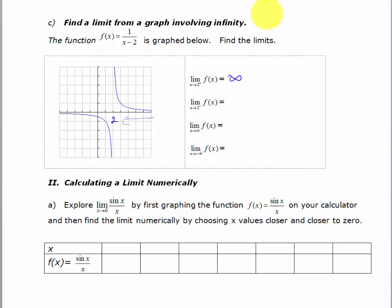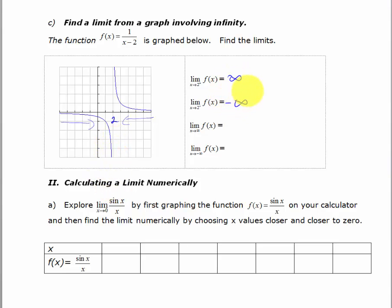As x approaches 2 from the left, the y values are getting smaller and smaller — going to negative infinity. Again, negative infinity doesn't exist, so technically the limit doesn't exist. But any time I can describe the limit, I want to — with either a finite number or with positive or negative infinity.